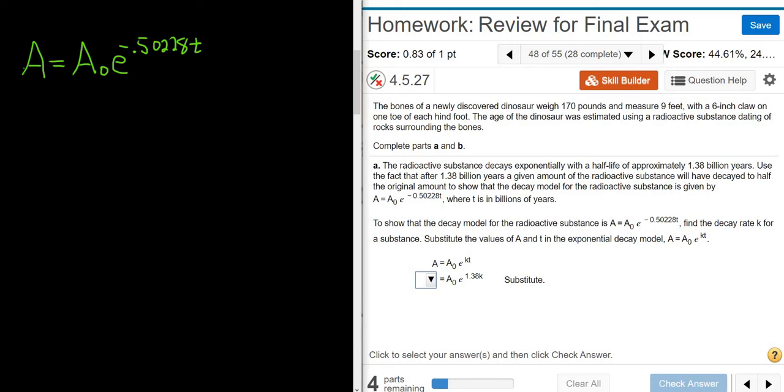This is how much you have left after T years, how much of the radioactive substance is left after T years. To show that the decay model is this, find the decay rate for the substance. So basically they're giving us this A equals A sub 0 E to the KT, okay?